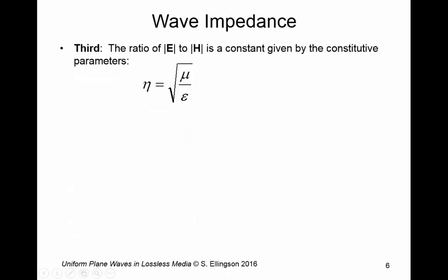The third result is that you find that the ratio of the magnitude of the electric to the magnetic fields is a constant and this constant is given by constitutive parameters. We call it the wave impedance. We call it the wave impedance. I give it the symbol eta and it's equal to the square root of the permeability to the permittivity.